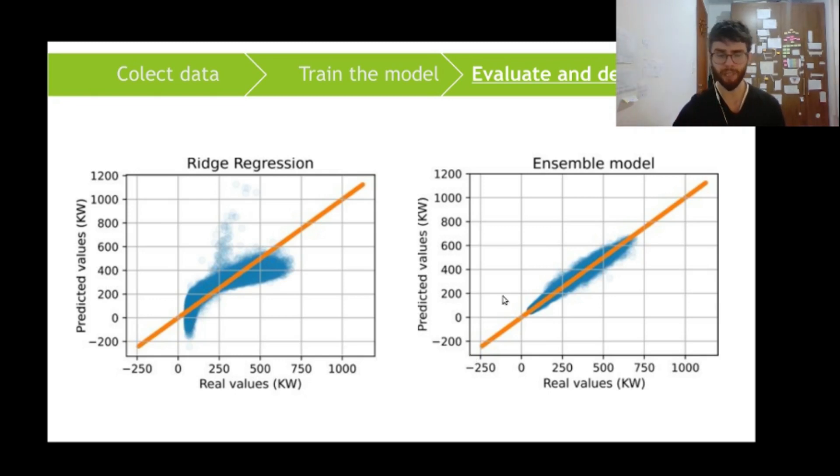So it doesn't really capture very well. And that makes sense, because ridge regression is a linear model. So it's not complex enough to model our phenomenon. But assembling several models with different weaknesses and strengths, we can overcome this problem and have a final model that is more accurate and best suited to our application.